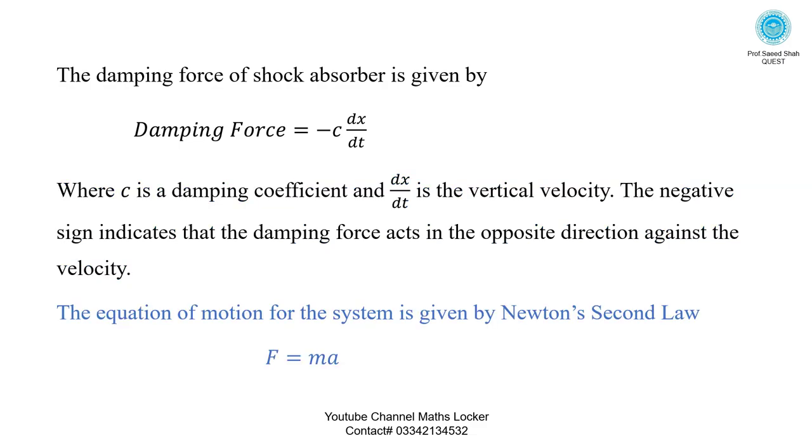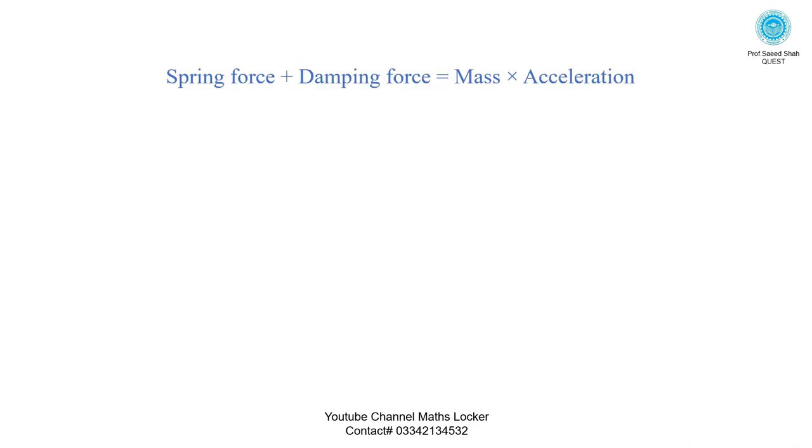The equation of motion for the system is given by Newton's second law: F equals ma. Spring force plus damping force equals mass times acceleration. Minus KX minus C times dx/dt equals m times d²x/dt². After simplifying, we have m times d²x/dt² plus C times dx/dt plus KX equals zero.